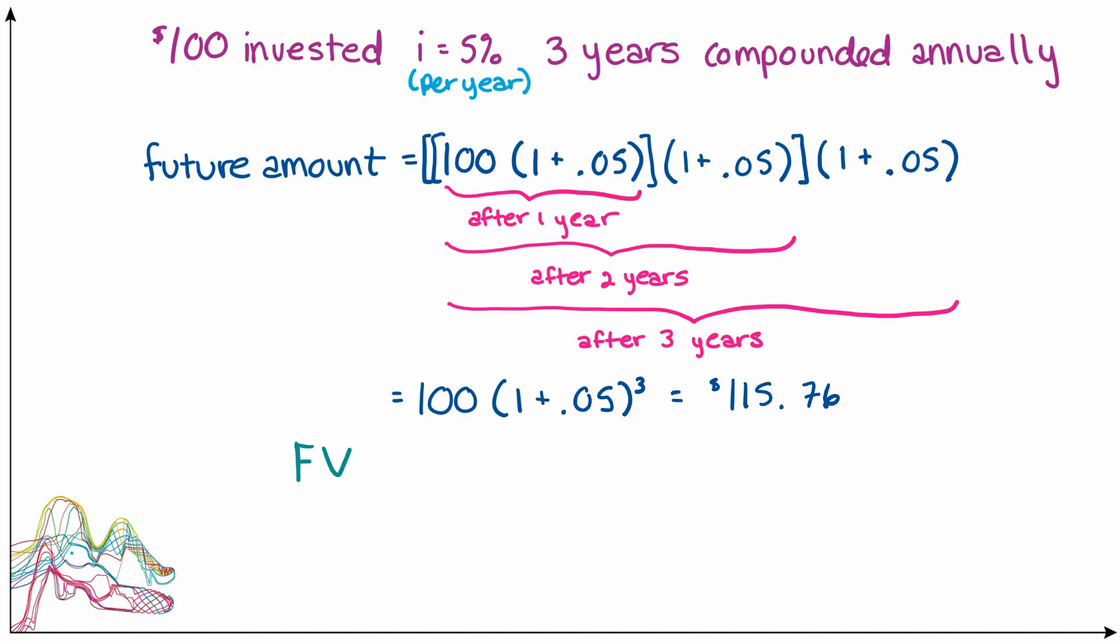More generally we can say that our future value, or the amount we'll have in the future, is equal to our present value, or the amount we're investing today, times 1 plus our interest rate as a number to the nth power. You can think of this n as the number of compounding periods. In this case, because we were compounding annually, our compounding period would be a year, so of course in this case our n was just 3.